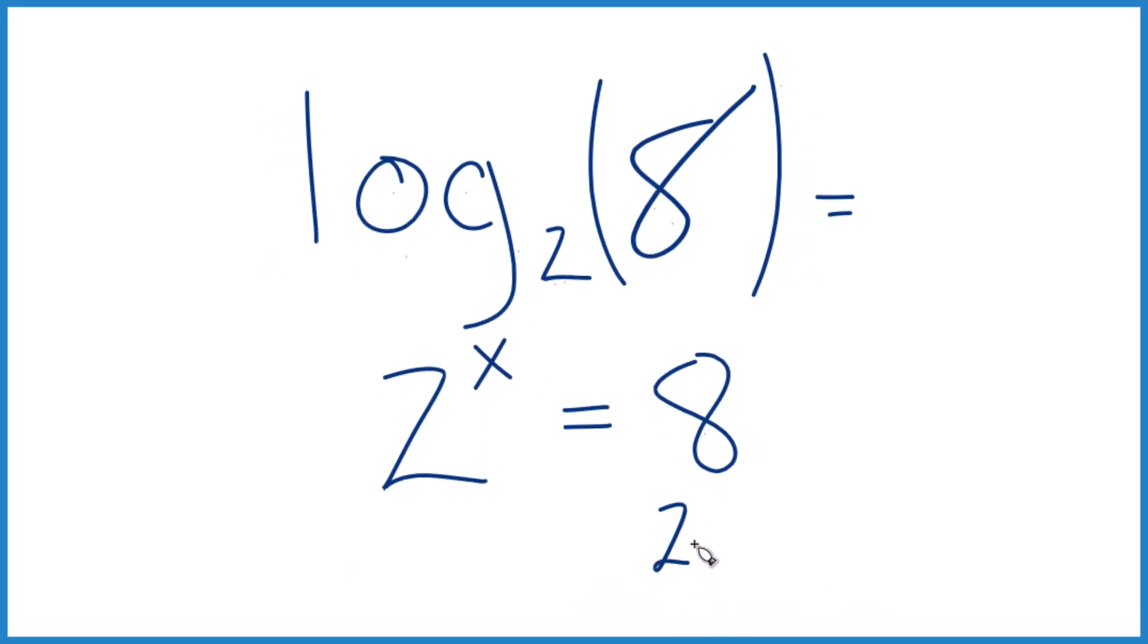8, that breaks down to 2 times 2 is 4 times 2 is 8. So there are 3 of these here. So 2 to the third, that equals 8. So x, that's 3, and log base 2 of 8, that turns out to be 3.